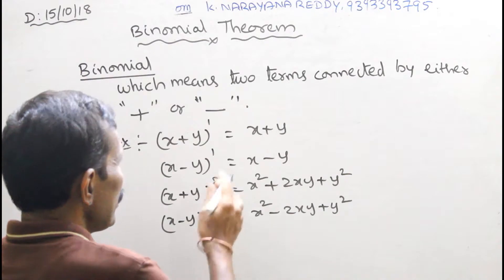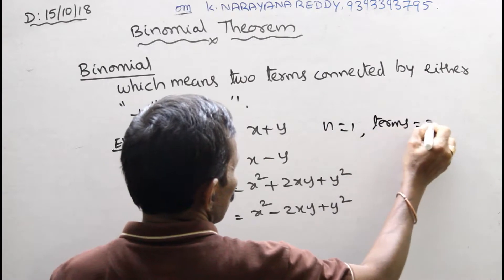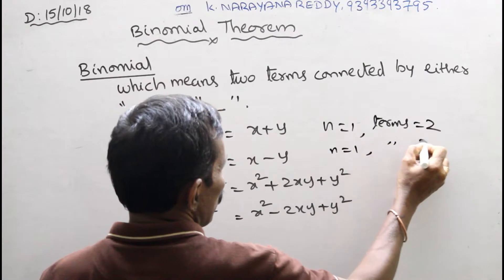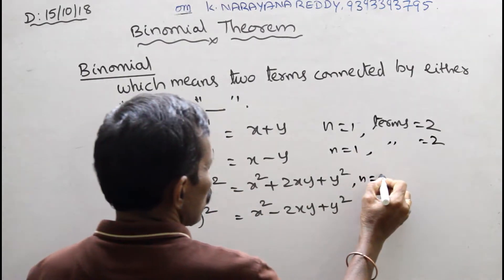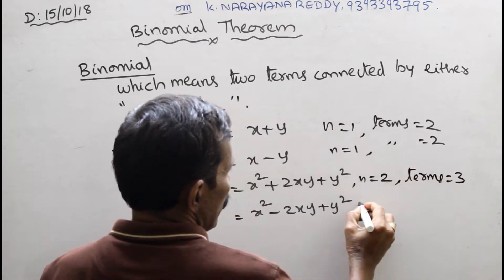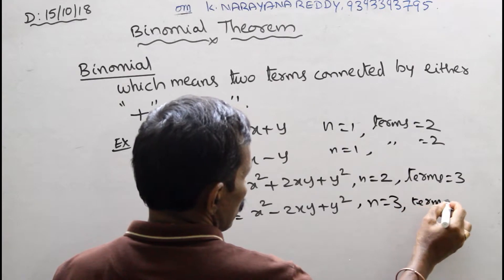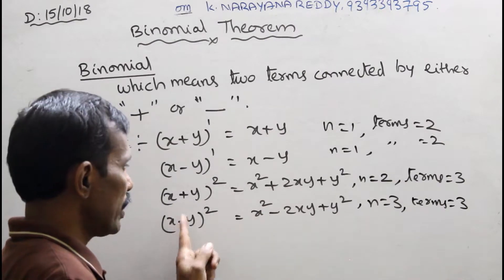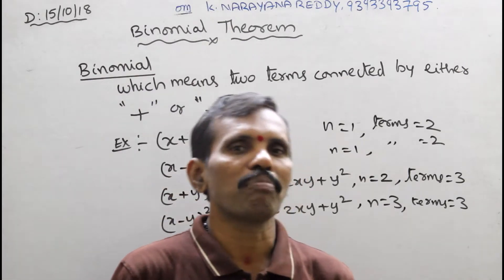Here, when n equals 1, the number of terms is 2. When n equals 2, the number of terms is 3. When n equals 3, the number of terms is also 4 — both plus and minus cases. So whenever the index is n, the number of terms is n plus 1.